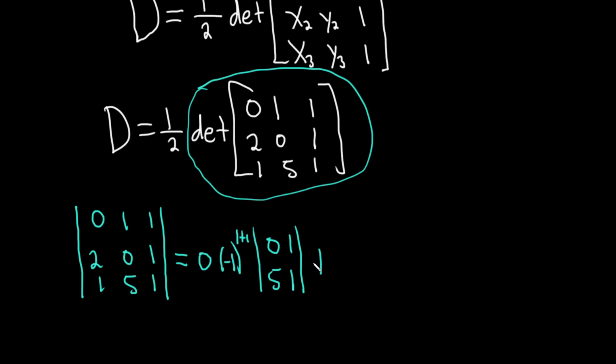And then it's plus, then 1, and it's negative 1 to the row plus column, first row, second column this time. So 1 plus 2—it's always row plus column, row plus column. You cross out the corresponding row and column. So crossing out the first row and second column, we're left with 2,1,1,1.